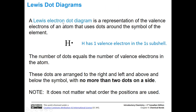Lewis dot diagrams are a representation of the valence electrons of an atom, using dots around the symbol of the element. For instance, hydrogen has one electron in the 1s subshell, so we put one dot by the hydrogen symbol. It doesn't matter which side you put the dot on. The key point is that there is one dot for every valence electron, and you can't arrange more than two valence electrons on any one side.